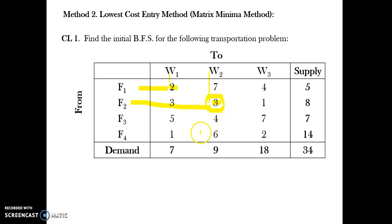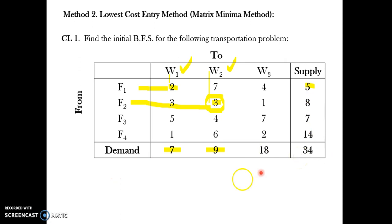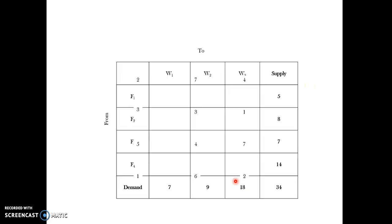Market W1 requires 7 units, W2 requires 9 units, and W3 requires 18 units. Factory F1 can produce only 5 units, F2 can produce 8 units, F3 can produce 7 units, and F4 can produce 14 units. This is a balanced transportation problem because demand equals supply. I have already discussed unbalanced problems in Vogel's Approximation Method.